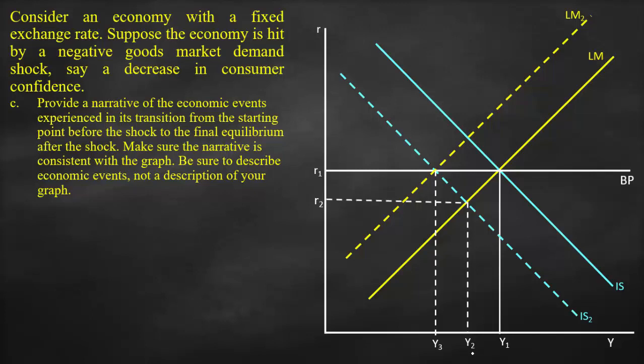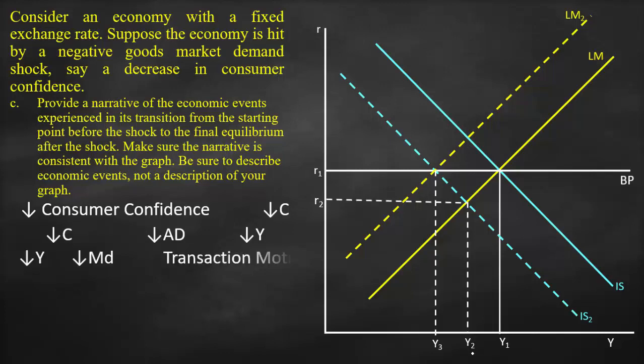For the narrative: we have a negative shock in the goods market due to lower consumer confidence. This results in lower consumption, which leads to lower output. Consequently, demand for money falls due to the transaction motive, since the income level drops. Therefore the interest rate decreases. This results in a capital flight from the domestic economy as investors seek the higher interest rates available abroad, resulting in higher capital outflow. The oversupply of domestic currency in the forex market — as investors seek to exchange it to buy foreign bonds — leads to depreciation pressure on the currency.